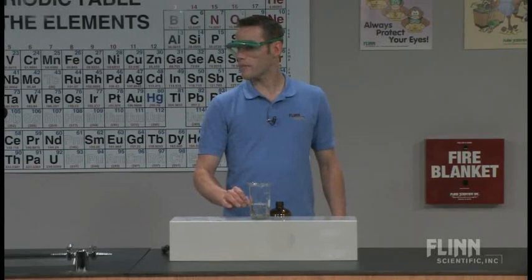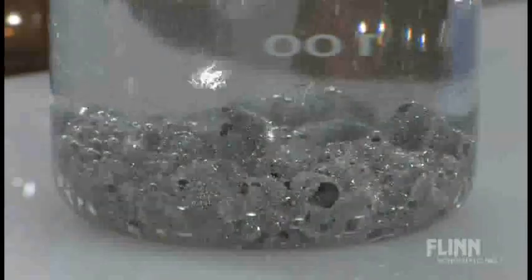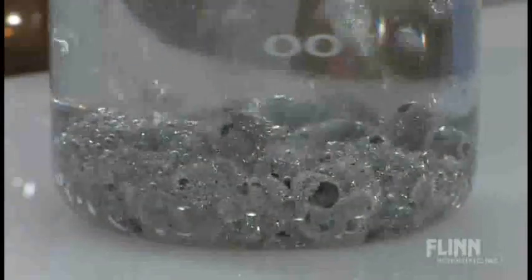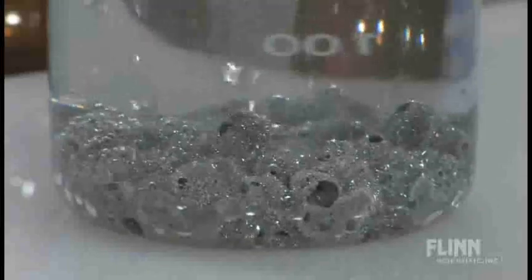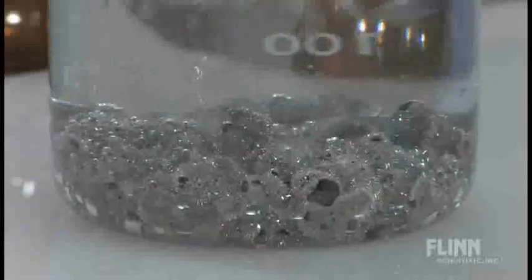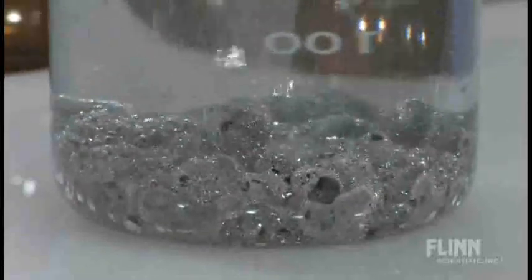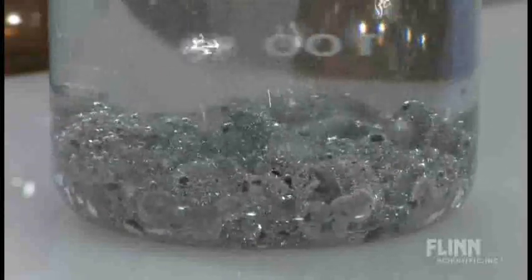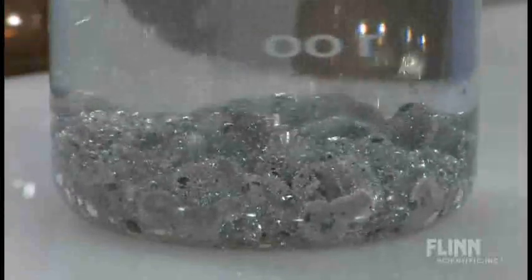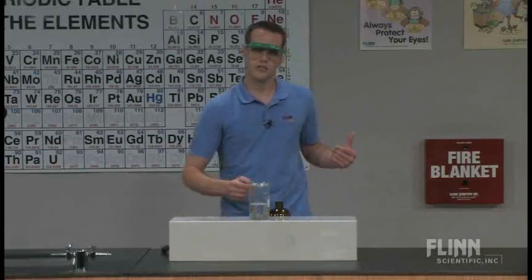The other one you can probably notice, if we can get this on the close-up camera, you can probably already start to see a little bit of fuzz forming on those zinc particles. That fuzz are tin, elemental tin crystals forming on the outside of the zinc. So we have two single replacement reactions here. I'm going to go to the chalkboard and put these reactions on the board.